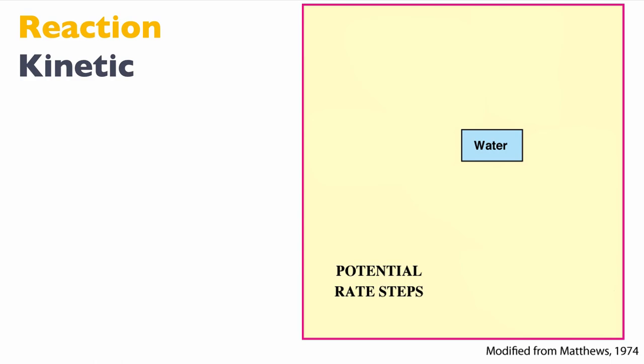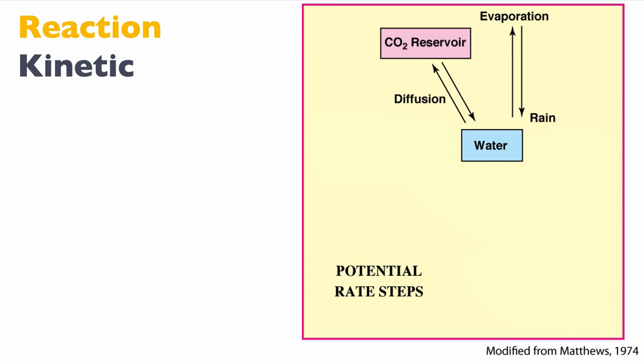Starting with only water: water can evaporate, giving us less water, or we can have precipitation, giving us more water. What's important is that there's a CO2 reservoir that can dissolve into this water or diffuse back out. That CO2 reservoir is important because it creates carbonic acid, which creates a weak acid in the water with the potential to dissolve the limestone around the meteoric water. So if we have unstable mineral phases like magnesium calcite or aragonite — not low-Mg calcite, which is more stable — there's a chance that the mineral might go into solution via a dissolution process.